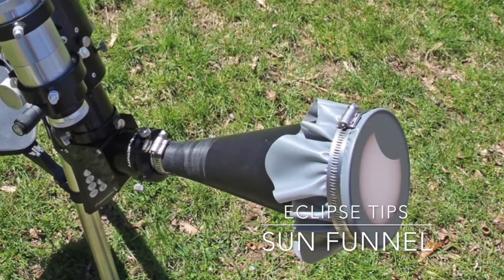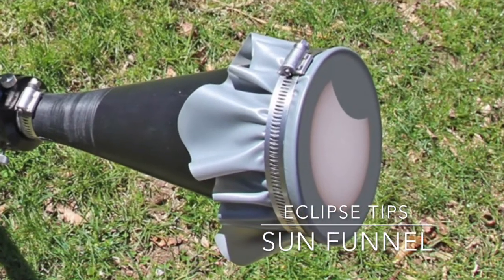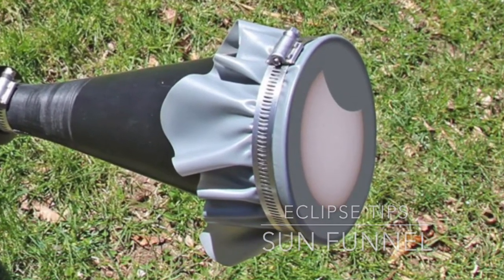The Sun Funnel is a great way to observe the upcoming eclipse because it will create an enlarged and projected image that can be observed by a small group of people. And there's other cool things we can see with this as well.